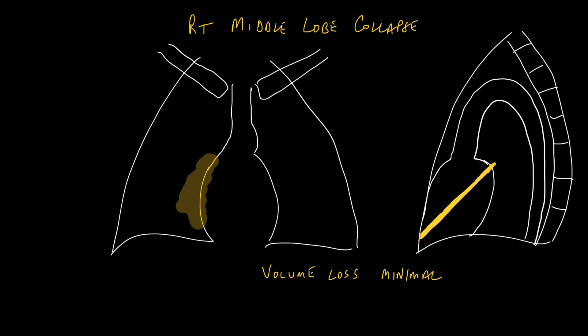In a right middle lobe collapse, the hazy shadowing caused by the collapse of the middle lobe abuts the right heart border, making it invisible. And on the lateral view, quite often you see a quite marked collapse of that lobe.